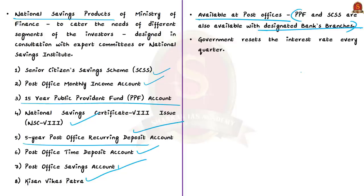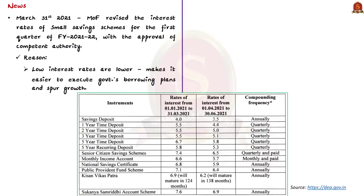The government resets the interest rate on these products every quarter. On March 31st, with approval of the competent authority, the Ministry of Finance revised interest rates for the first quarter of FY 2021–22 (April 1st to June 30th). Rates were cut in varying ranges from 40 basis points (0.4%) to 110 basis points (1.1%). The sharpest cut was in one-year time deposits, and PPF returns were cut to a multi-decade low. This move was taken because lower interest rates make it easier to execute the government's borrowing plans, and high small savings rates have been cited by RBI as a major impediment to policy rate transmission into the banking system.